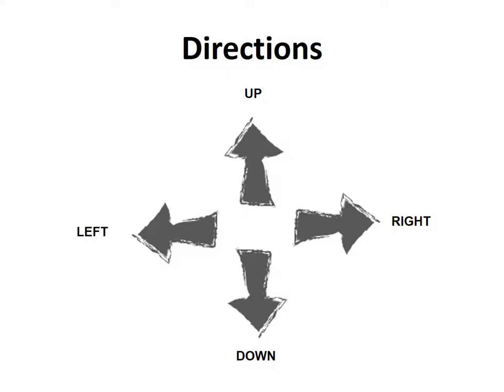The up direction arrow takes our cartoon from a lower point to an upper point. In exactly the same way, the right arrow direction takes our cartoon to the right. The down arrow takes our cartoon downwards, and the left arrow takes our cartoon to the left.